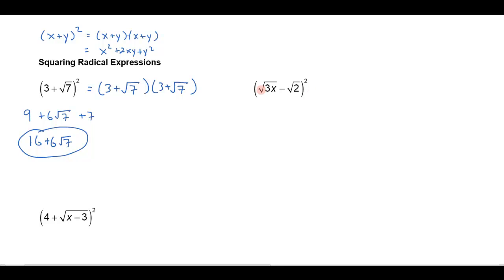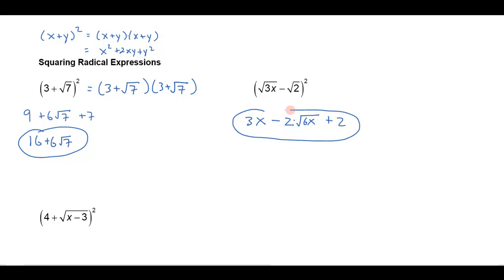Now let's square (√(3x) − √2)². I square √(3x) to get 3x, then I multiply √(3x) times negative √2, which gives me negative √(6x). I double that to get −2√(6x), and the 2 stays outside the radical. Then squaring negative √2 gives me +2.